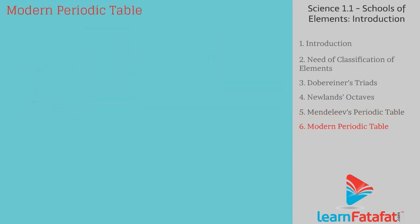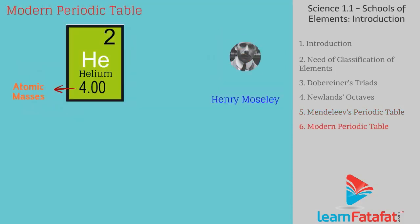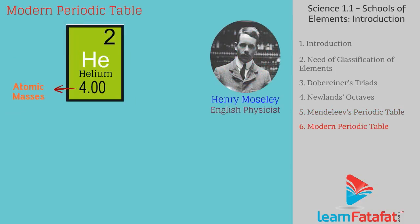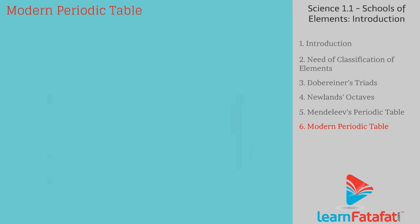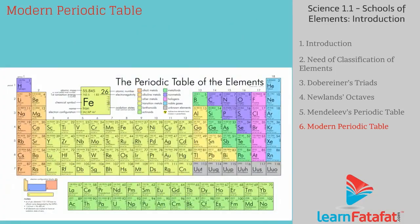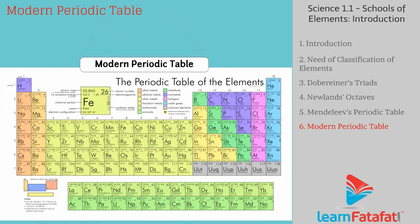Henry Moseley, an English physicist, found that atomic number is the most fundamental property of an element. So Mendeleev's Periodic Table was modified to form the Modern Periodic Table. The demerits of Mendeleev's Periodic Table were eliminated in the Modern Periodic Table.